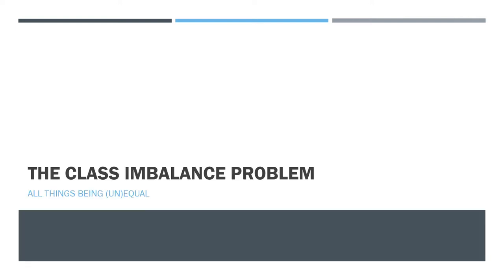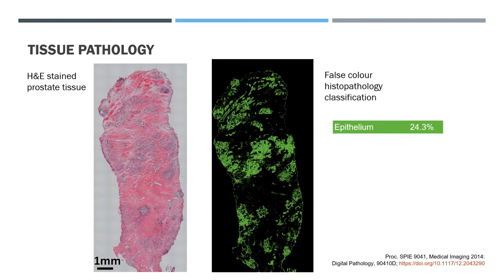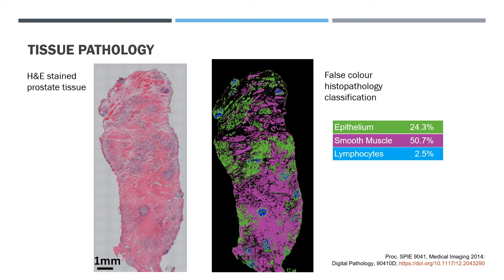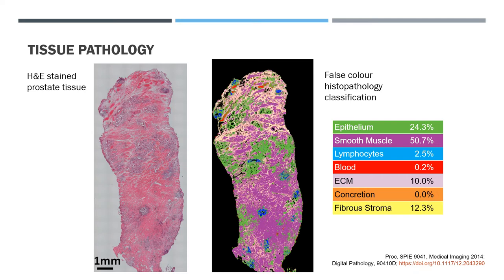So what is the class imbalance problem? Consider a piece of tissue stained with H and E to highlight the cell morphology. We can analyze this using infrared and build a model to identify various cell types. Note however that there is a wide range in the composition of the tissue. Some cell types only appear in very low abundance and it's this difference in the number of spectra in each class that can present a problem when we come to build our chemometrics models.